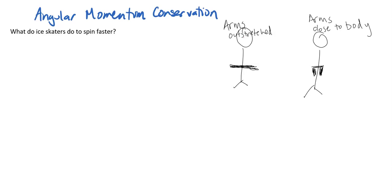Okay, so today we're going to talk about angular momentum conservation. Let's think about it: what do ice skaters do to spin faster? Imagine an ice skater with their arms outstretched, and then all of a sudden when they put their arms closer to their body, they speed up. It's just